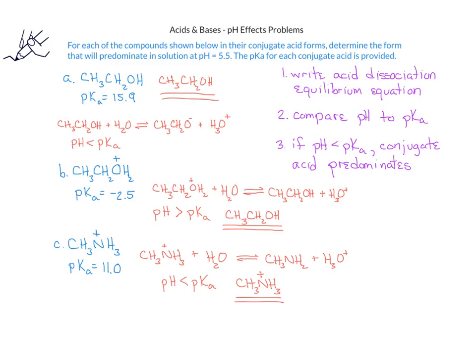For the third example, we have the methyl ammonium cation with a pKa of 11.0. The conjugate acid form, methyl ammonium cation, will react with water to produce methyl amine and hydronium ion. The pH of 5.5 is less than the pKa of 11.0, which means that the conjugate acid form, the methyl ammonium ion, will exist in solutions at a pH of 5.5.